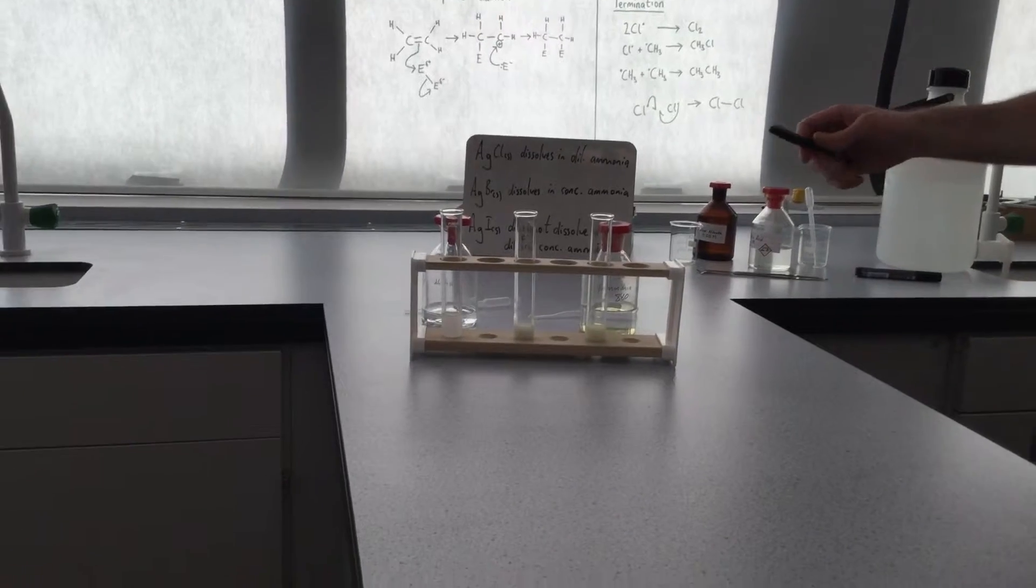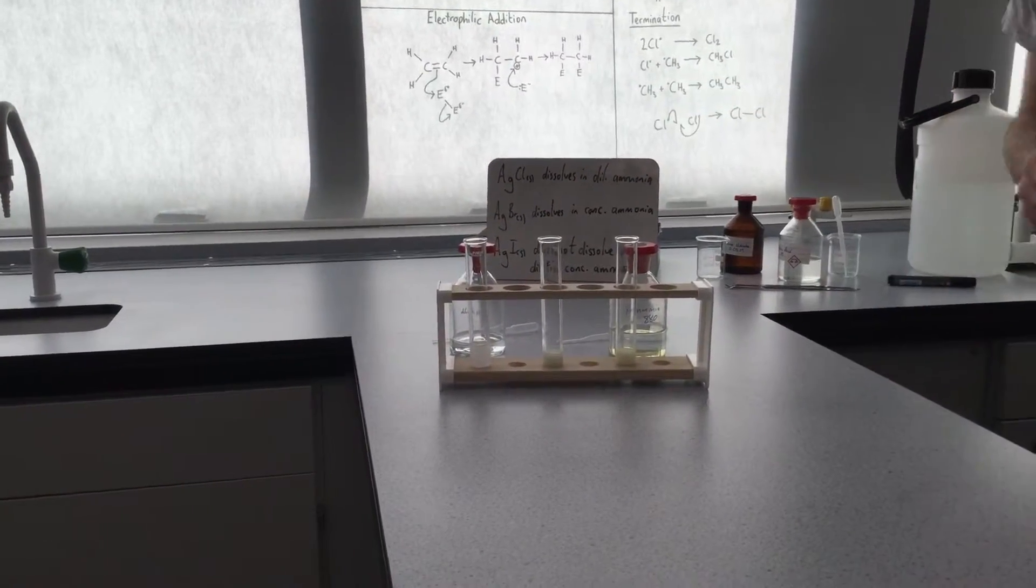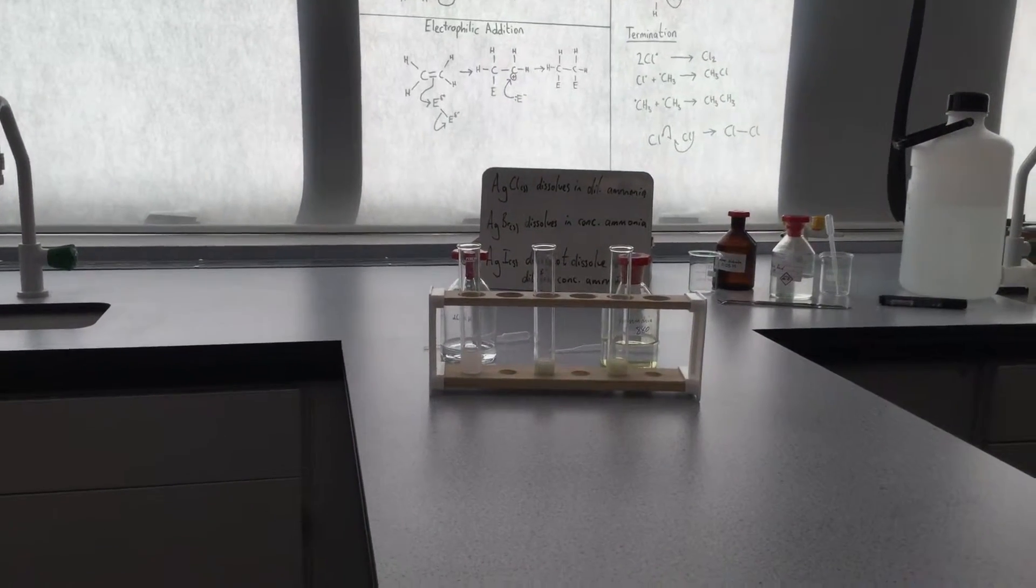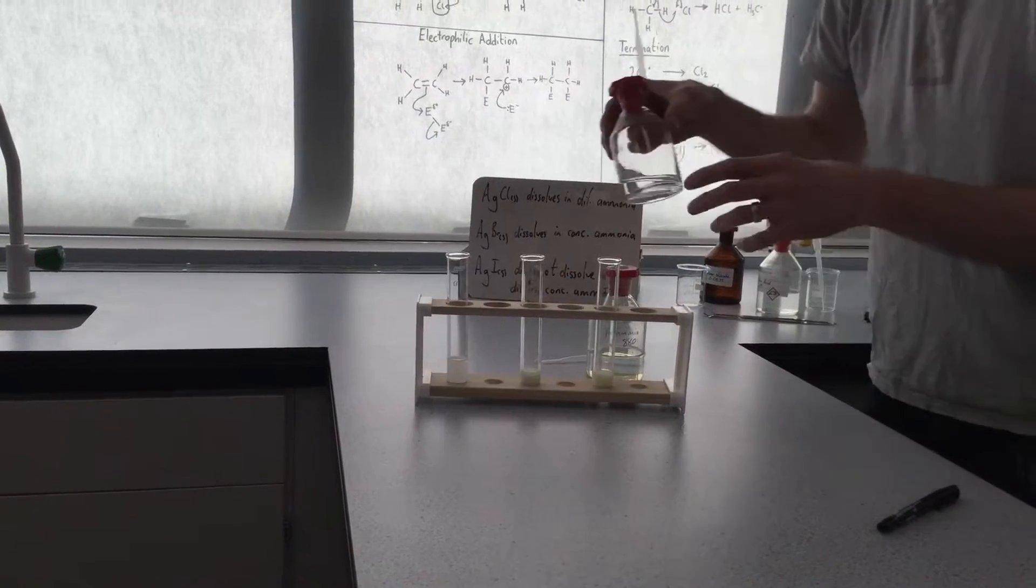So it's sometimes difficult to tell the difference between the bromide and iodide color. So a further test that you can do is to see if the precipitate redissolves in ammonia. And we're going to start off with the chloride precipitate.